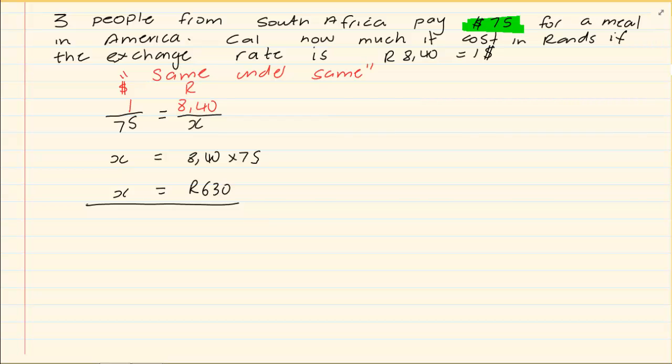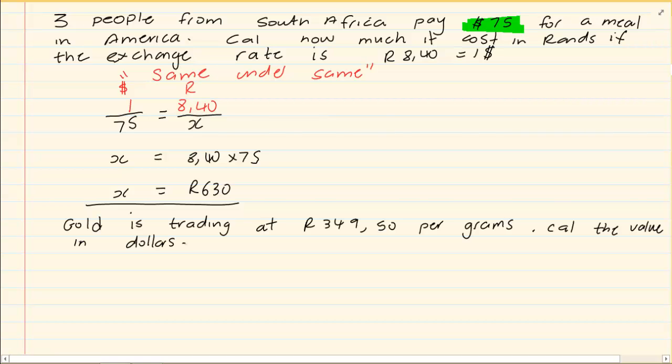Now let's try a different example. Gold is trading at 349.50 rand per gram. Calculate the value in dollars. Now we know the ratio is $1 equals 8.40 rand. I have rands. So under R I am going to put 349.50. And under dollar I am going to put X.